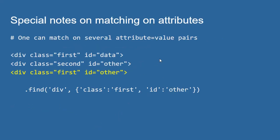There are some special notes when matching on attributes. First, I can pass a dictionary with multiple key-value pairs as the second argument to find or find_all, matching on several criteria at once. For example, given three div tags where two share class 'first' and two share id 'other', if I want only the third tag I can specify both class 'first' and id 'other' in the dictionary, and that returns exactly the tag I'm looking for.